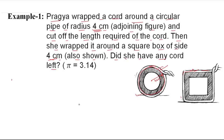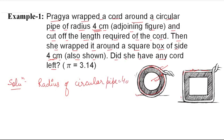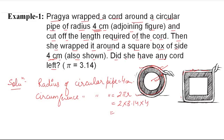Let's see the solution. The radius of the circular pipe is equal to 4 cm. The circumference of the circular pipe is equal to 2 pi r, that is 2 into 3.14 into 4. This gives us 25.12 cm.